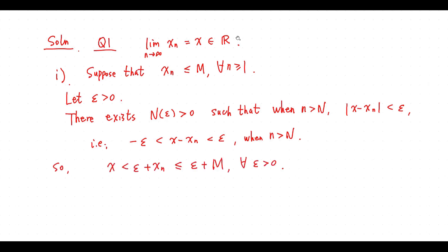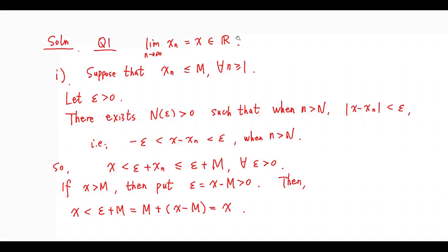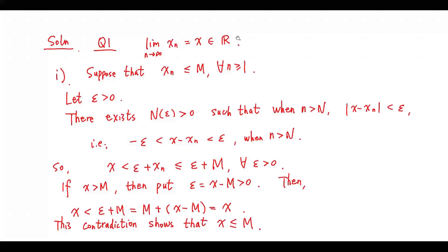So we get x is less than epsilon plus M for any epsilon greater than 0. If x is greater than M, then put epsilon equals x minus M. Then we get x is less than x, a contradiction. This contradiction shows x is less than or equal to M.